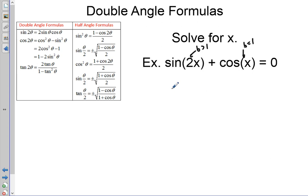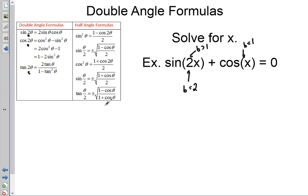This is a very difficult problem to solve without your calculator, so to help us solve it without our calculator we're going to use the double angle formula. It's called double angle because the b value is equal to two — that's when you know you have a double angle formula. Sine of 2θ, cosine of 2θ, tangent of 2θ are the double angle formulas. When you have x over 2, those are the half angle formulas.